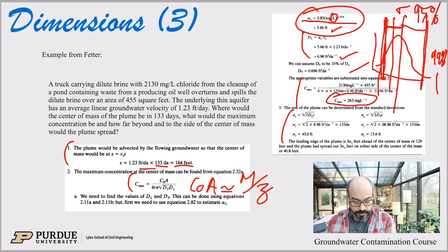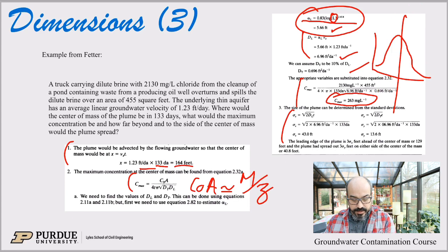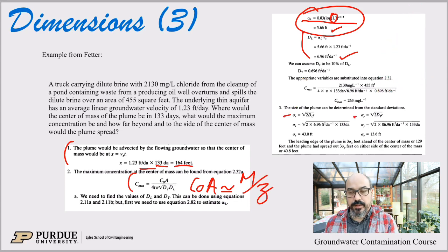So in the book, in Federer, he uses that three standard deviations away argument. So first we calculate those standard deviations. So again, square root of 2DT. So T is 133 days, D we just calculated. So we have sigma x and then sigma y. So we have 43 feet in the x direction and 13.6 feet in the y direction. These are our standard deviations.